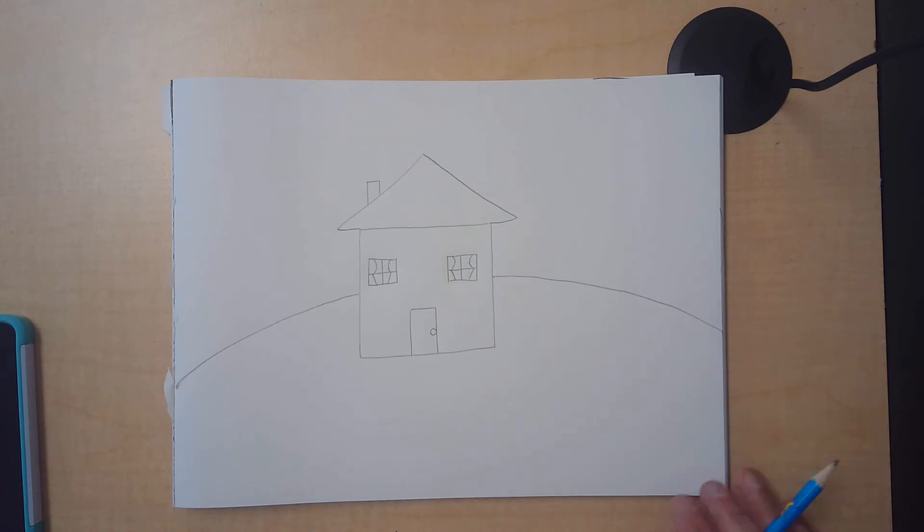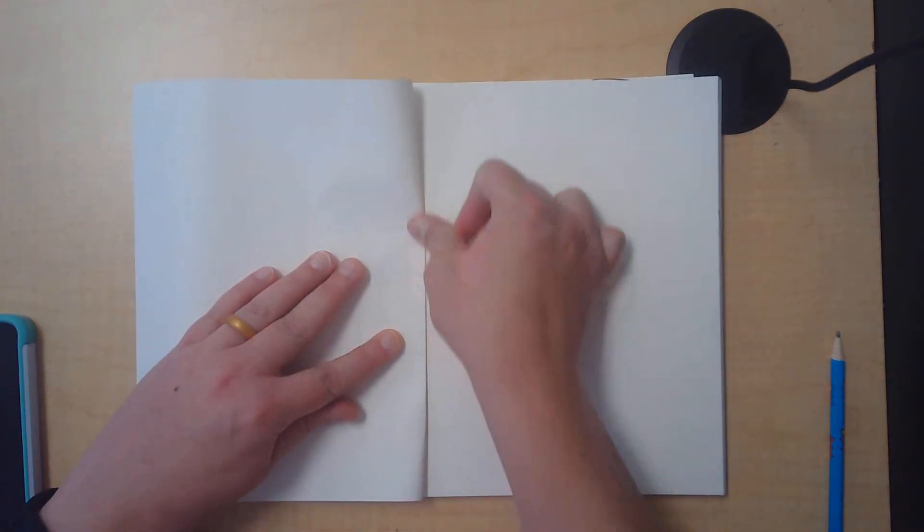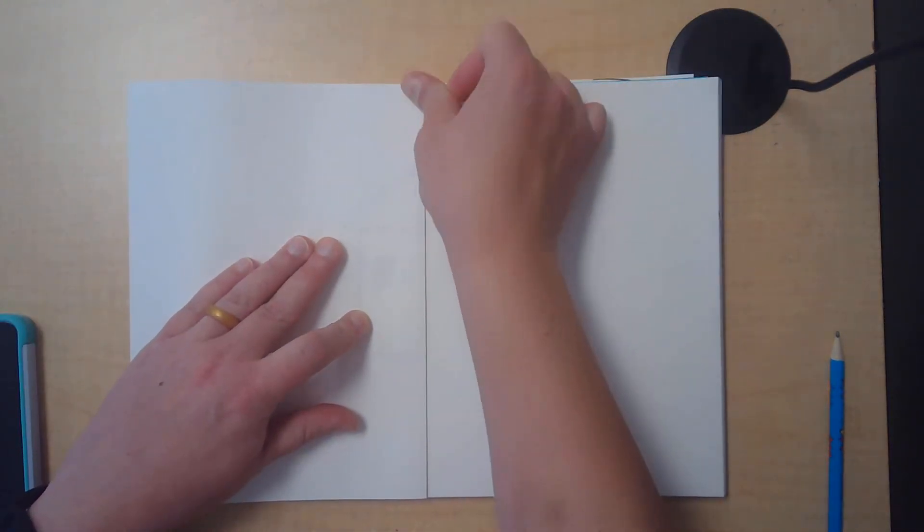Once we have our beautiful little house and our beautiful little hill, we're going to take our beautiful little drawing and we're going to fold it in half. If you can't fold things in half perfectly, do not worry, but do do your best and if you need help let me know.